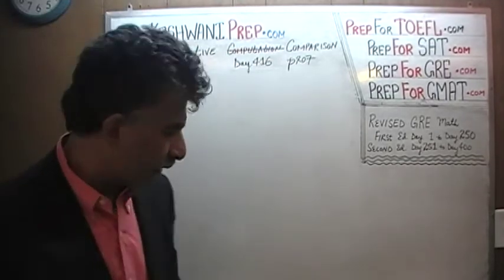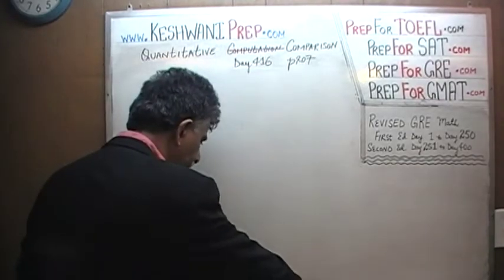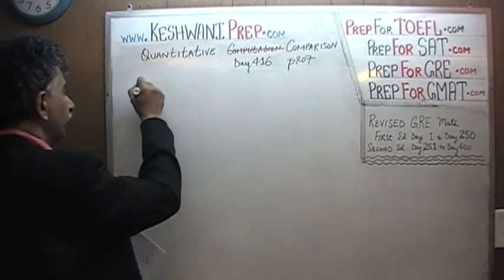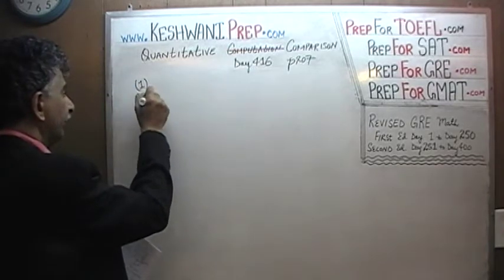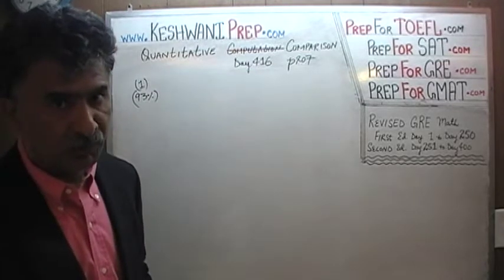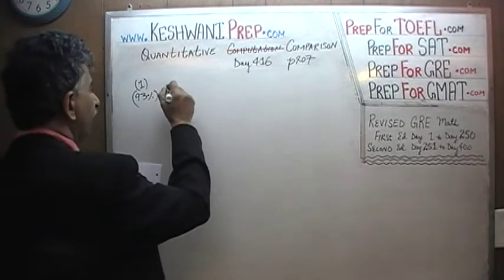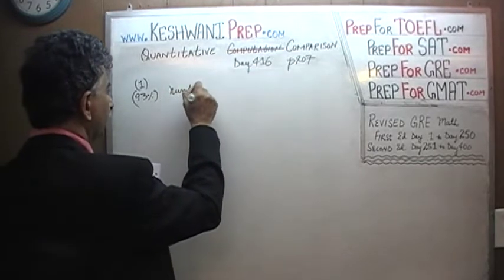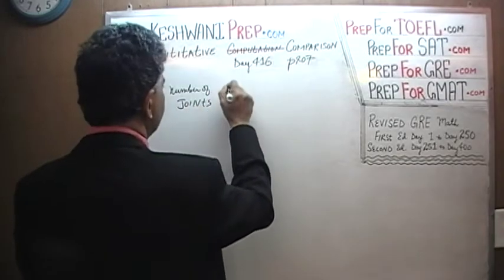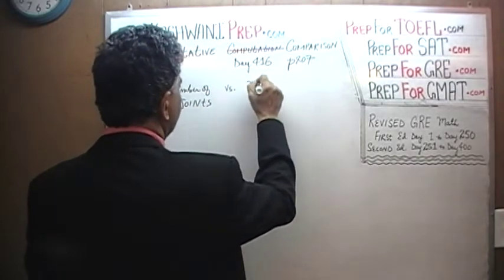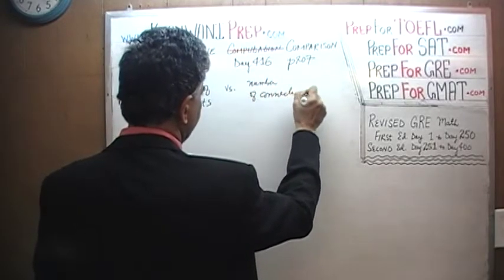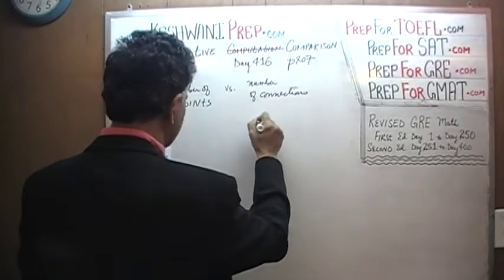Page number 207, problem number 1. Because it is problem number 1, it is a very straightforward and simple problem — so simple, in fact, that when it was given in the real exam, 93% of people who took the exam had no problem with it. Here is what it says: we are being asked to compare number of joints versus number of connections. Here is the picture that is given to us.